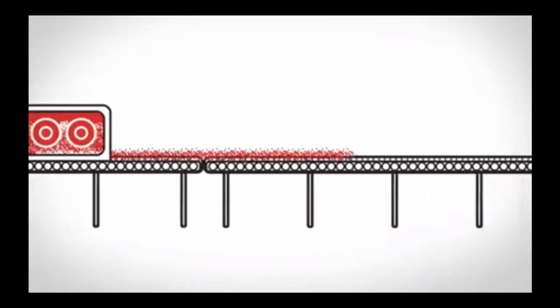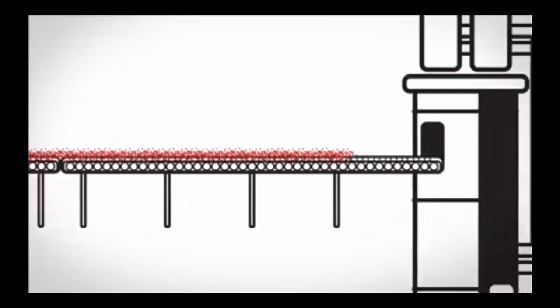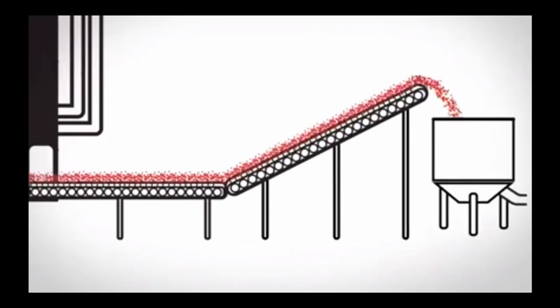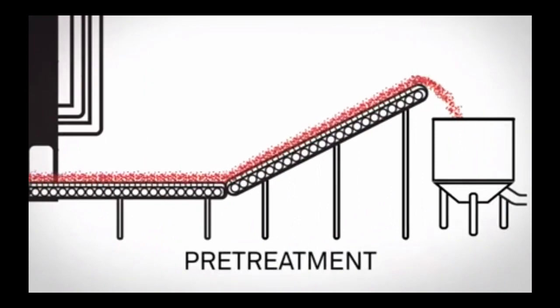After processing the wood chips, they are treated with high pressures and steam to break down the various components of the wood cells and separate fibers. This is known as pre-treatment.